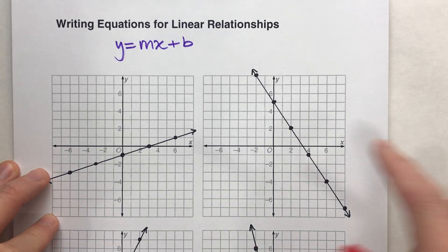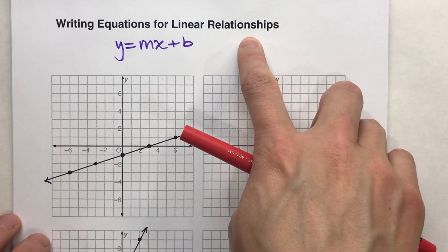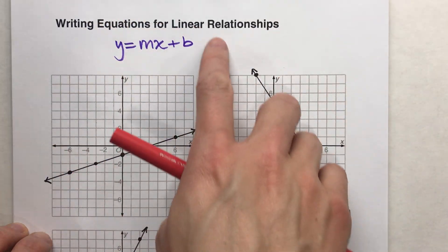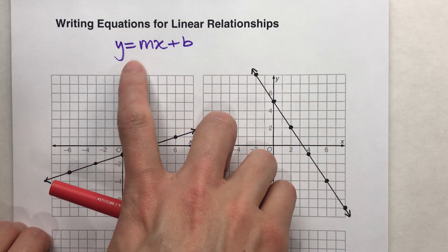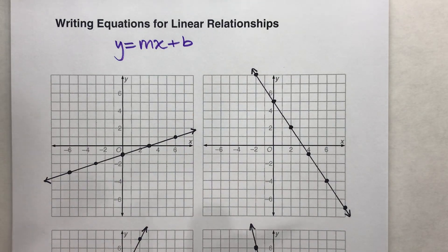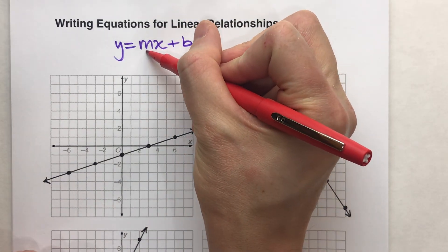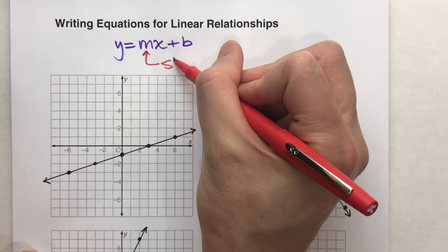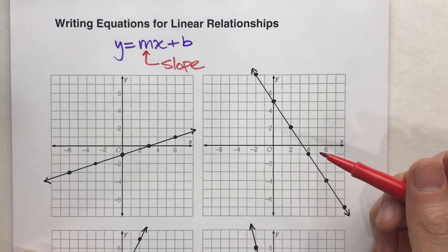So today, I'm going to show you how to write equations for linear relationships. The general form for a linear relationship is y equals mx plus b. Now that looks like a lot of variables, but the m is usually a number, and that number is the slope of the line.